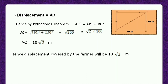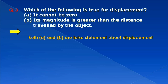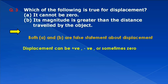Third question: which of the following is true for displacement? Displacement cannot be zero — False, it can be zero when the object returns to its original position. Its magnitude is greater than the distance — False, displacement cannot be greater than distance. Displacement will always be smaller than or equal to distance. Both options A and B are false statements. Displacement can be positive, negative, or zero, but can never be greater than the distance.